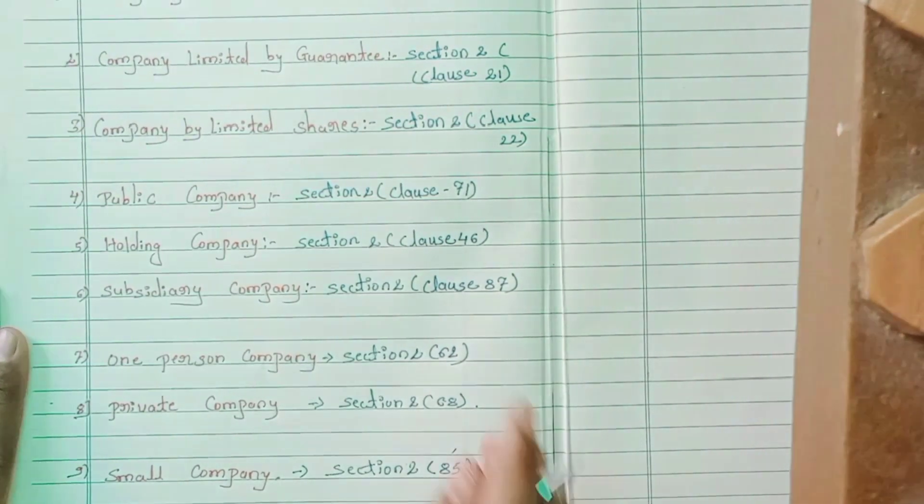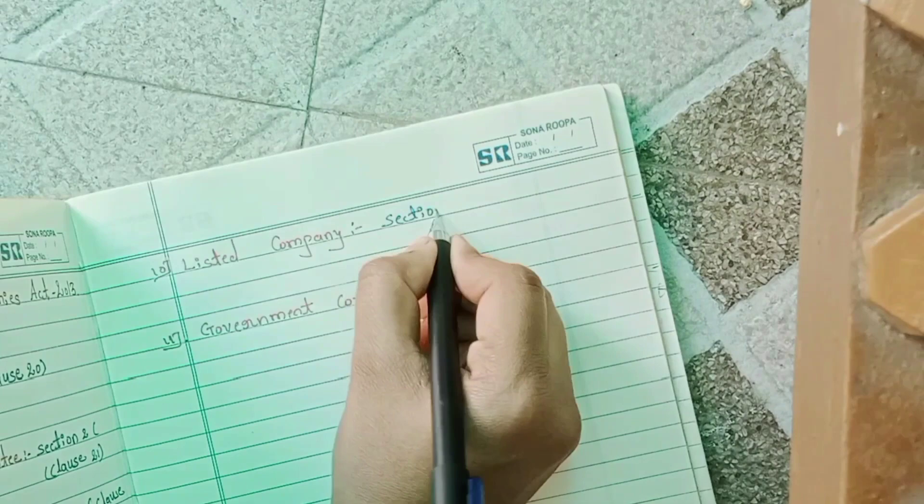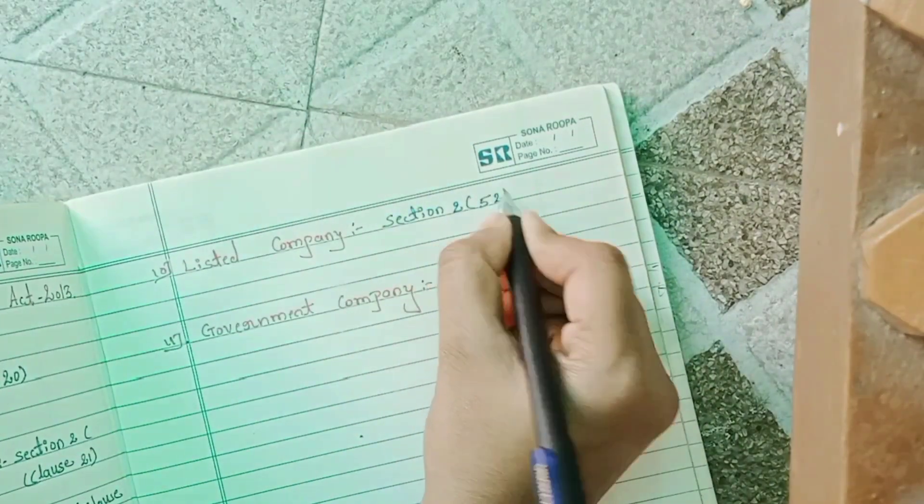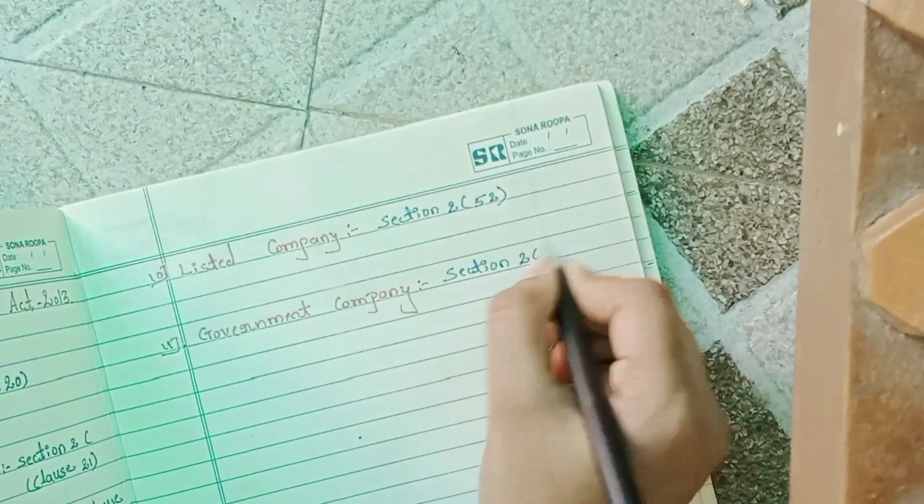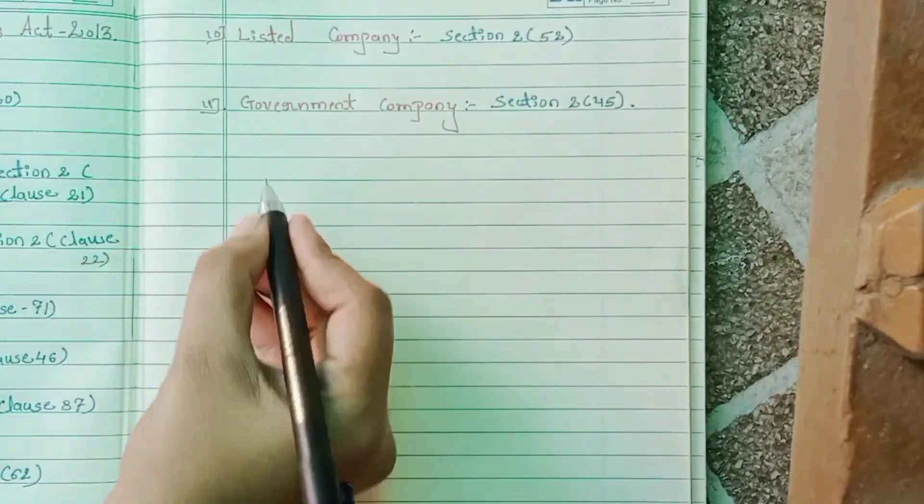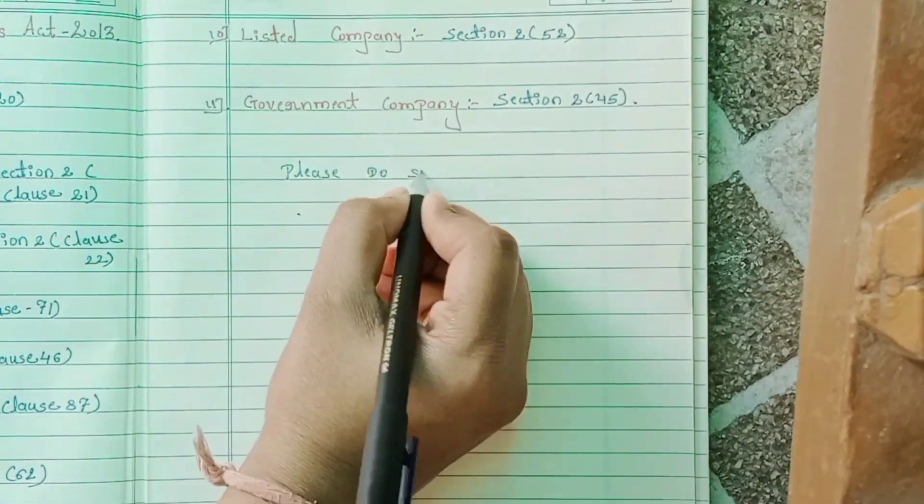Section 2 Subsection 85. Listed Company Section 2 Subsection 52. Government Company Section 2 Subsection 45. Please do subscribe our channel for further information.